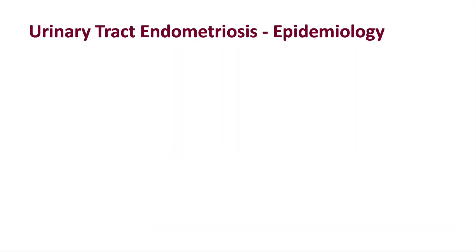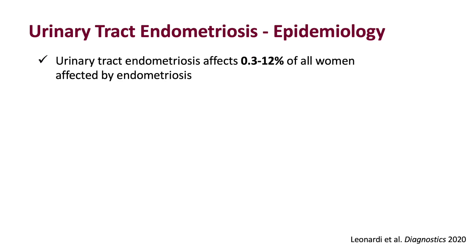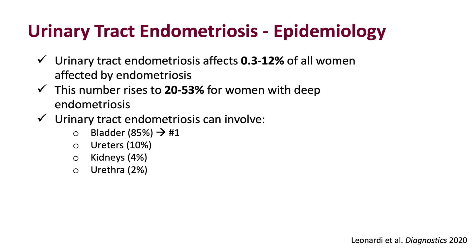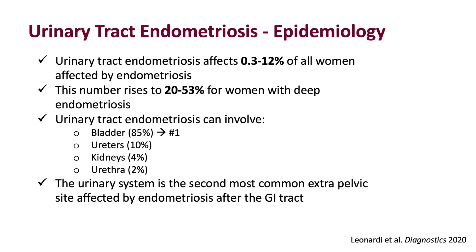Urinary tract endometriosis affects up to 12% of all women with endometriosis. However, this number rises to 20-53% for women with deep infiltrating disease. The bladder is the most common site, but the uterus, the kidneys, and the urethra can also be involved. The urinary system is the second most common extrapelvic site affected by endometriosis after the GI tract.